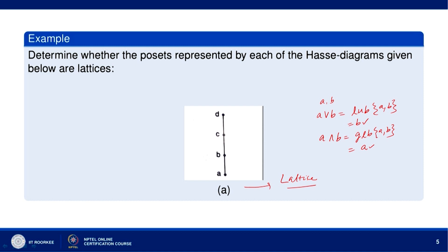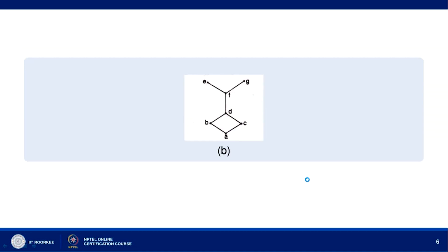Now let us go to the next Hasse diagram. Here we notice that if we take E and G, then E meet G — which is the least upper bound of E and G — does not exist. E and G do not have any upper bound, so they do not have any least upper bound, and therefore this poset is not a lattice.